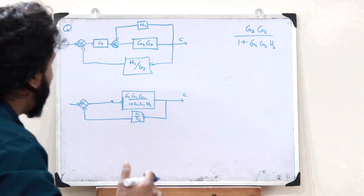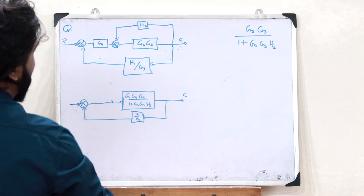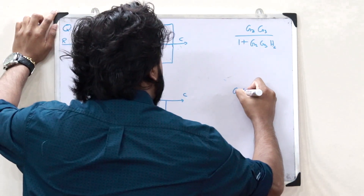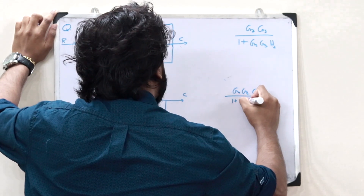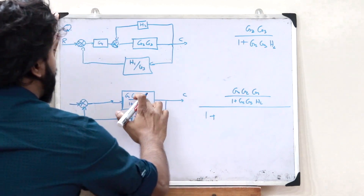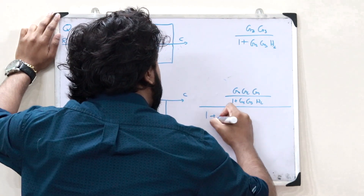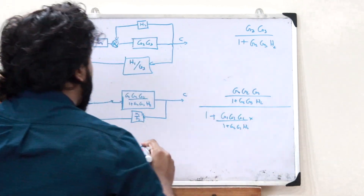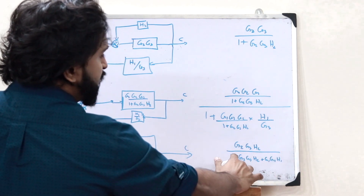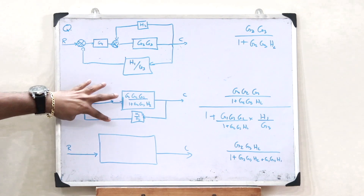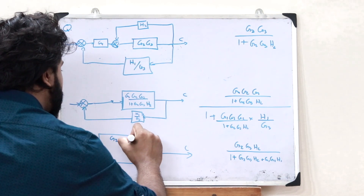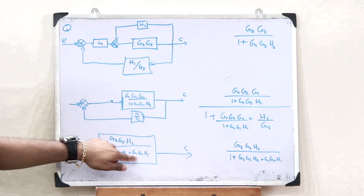This combined block now has H1/G3 as a negative feedback. Applying the negative feedback formula again, the final result simplifies to G1·G2·G3 divided by (1 + G2·G3·H2 + G1·G2·H1). This is the transfer function of the entire complex block diagram reduced to a single block.